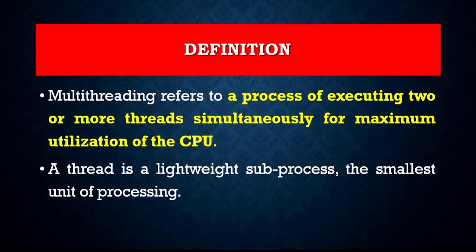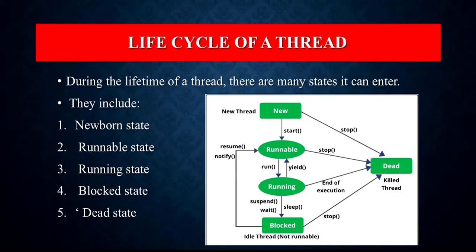Before we learn more about multi-threading and how to create a thread, let us learn the life cycle of a thread. The life cycle of a thread in Java is basically the state transition of a thread that starts from its birth and ends at its death. This life cycle has five stages: New or Newborn, Runnable, Running, Blocked, and Dead. You can see them in this example diagram.